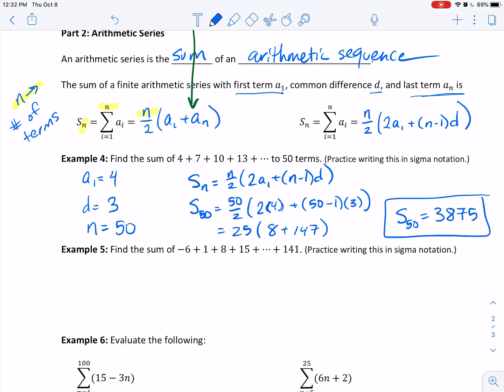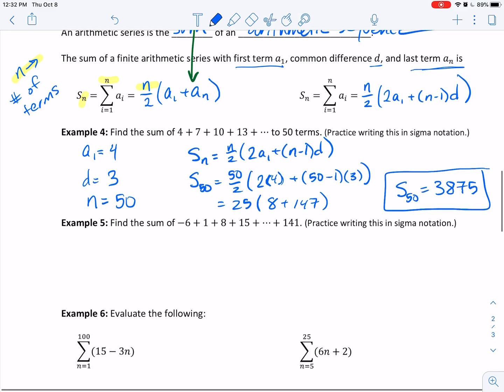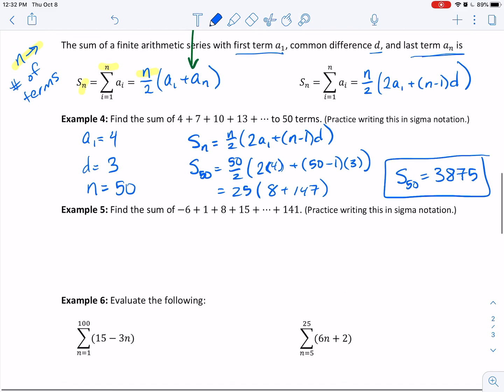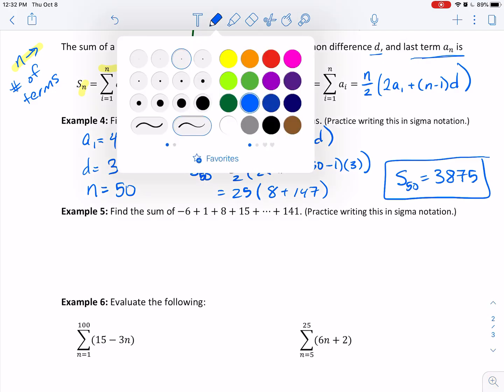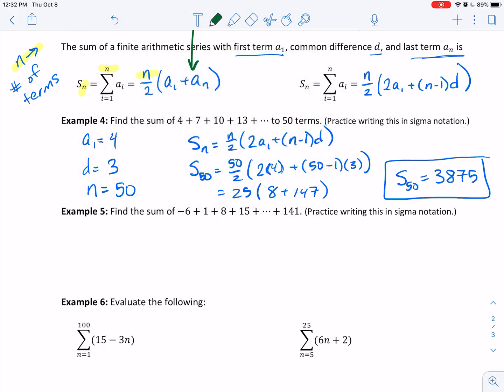And we were supposed to practice writing this in sigma notation. With that one, we need a_n would be equal to a_1 plus (n-1) times d. We could clean this up and say this is 3n + 1. So the sigma notation is the sum as n goes from 1 to 50 of that equation, 3n + 1. That's putting it in sigma notation.